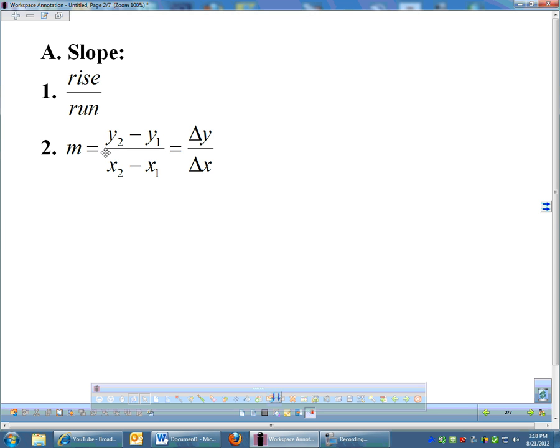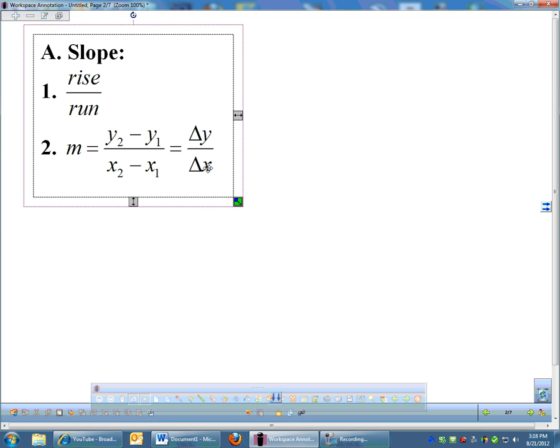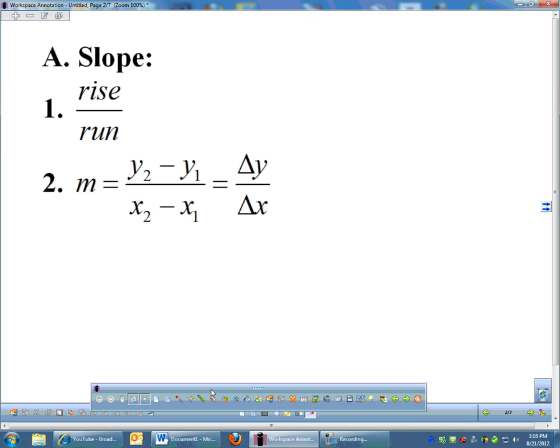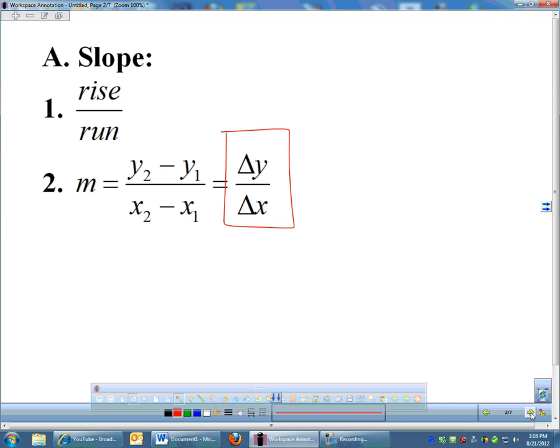You know what slope is? It's rise over run. It's also change in y over change in x. I absolutely love this notation right here, and you will see why in about a month, maybe not even that long, but the delta y over delta x, change in y over change in x, and you know how to find slope, so we're not going to harp on that much longer.